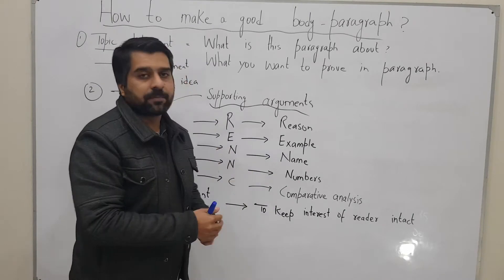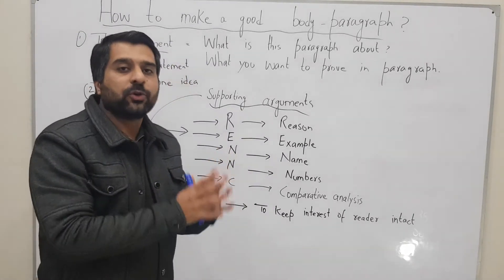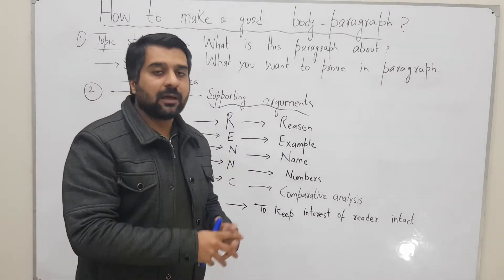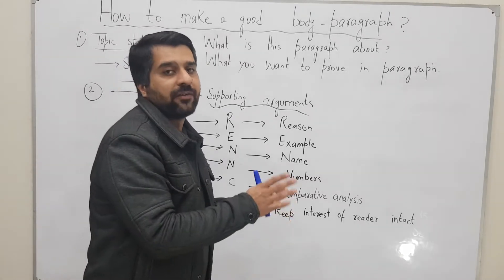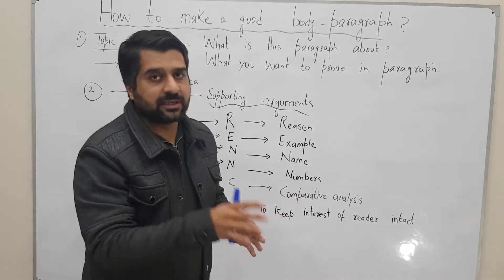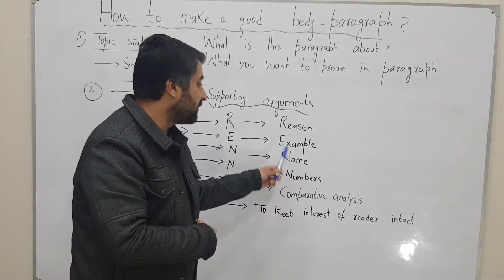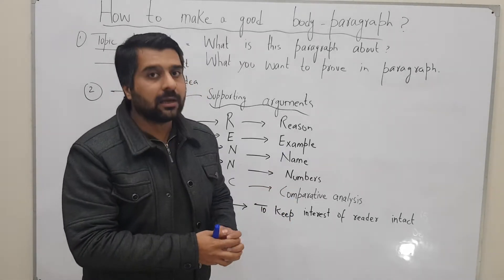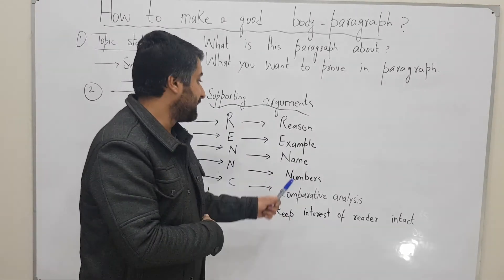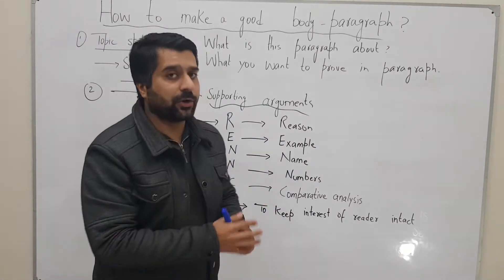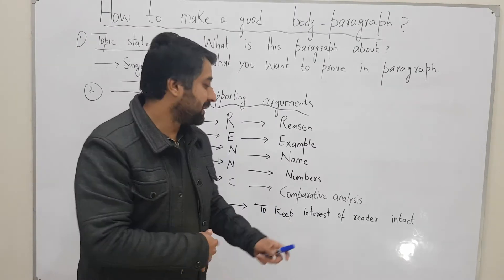The first part is Reason — you can support your topic statement by providing the reason behind the phenomenon you are discussing in your topic statement. Then you can also give an Example to prove your topic statement. Then you can also add a Quotation to prove your topic statement.